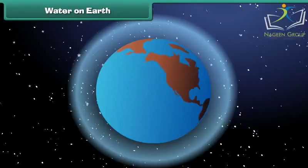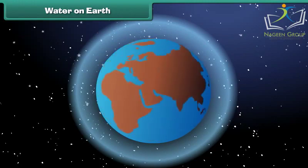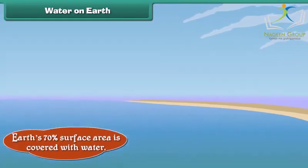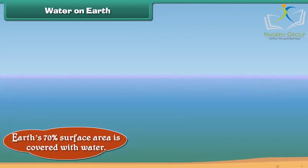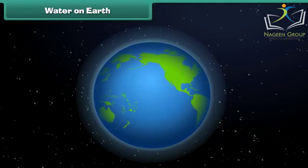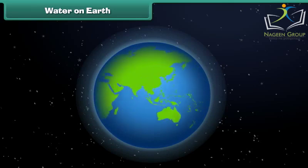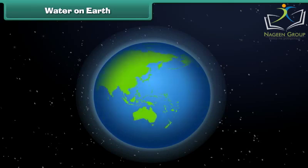What is the most abundant substance present on the earth? In fact, our earth's 70% surface area is covered with water. Do you know earth is also called the blue planet because when seen from space it appears blue due to water.